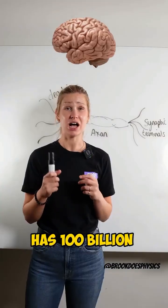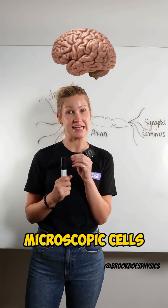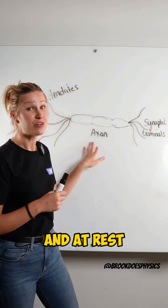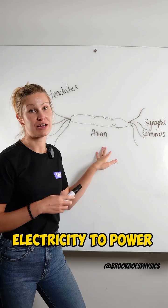Did you know that your body runs on electricity? Your brain has a hundred billion microscopic cells called neurons, and at rest there's enough electricity to power a light bulb.